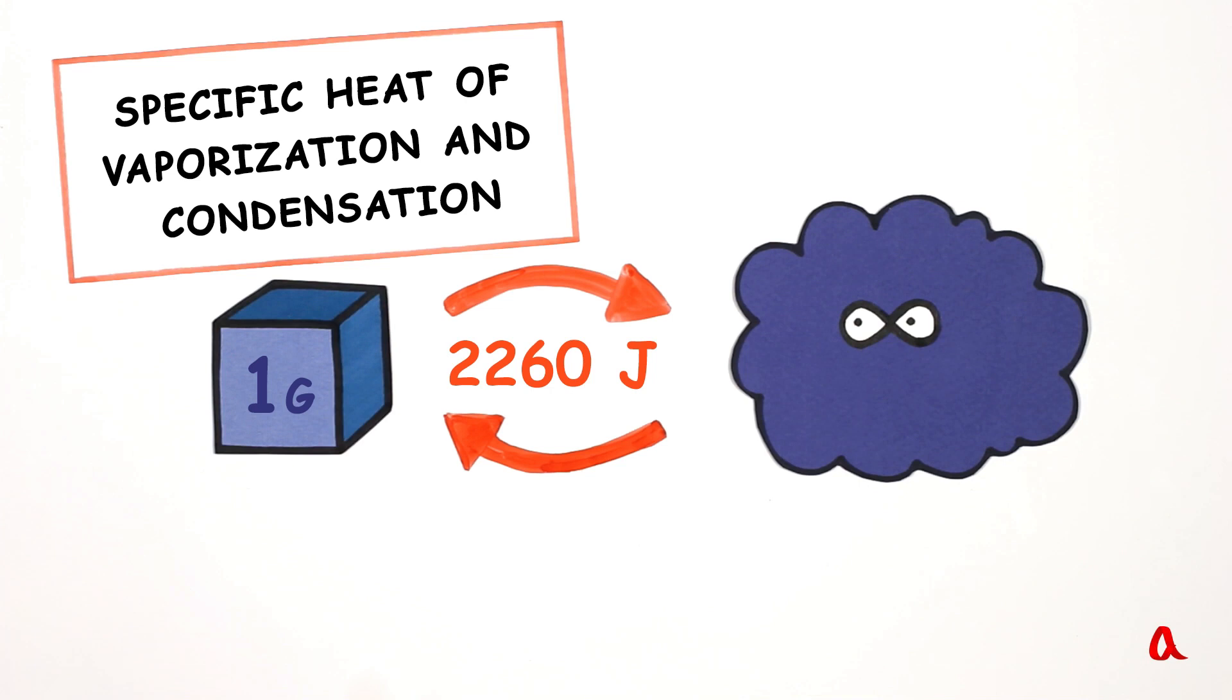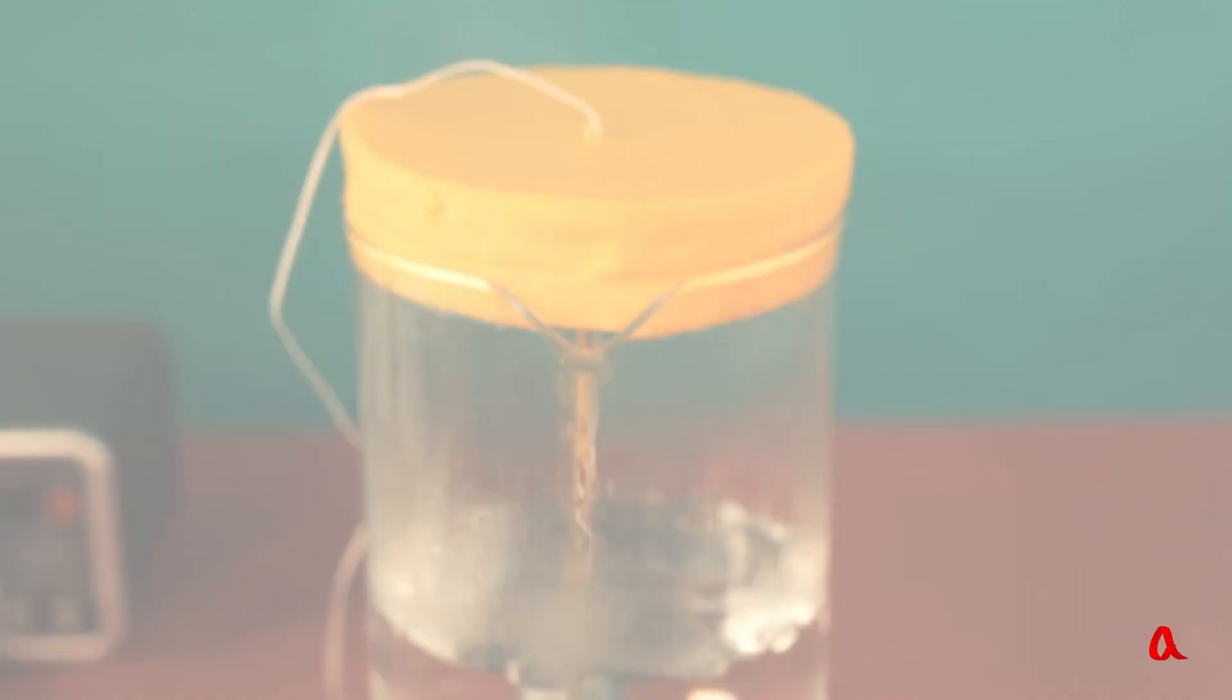By the way, what is the meaning of 2260 J? It's the energy of a bullet fired from a rifle. So, you'd better not put your hand over a kettle steam stream.